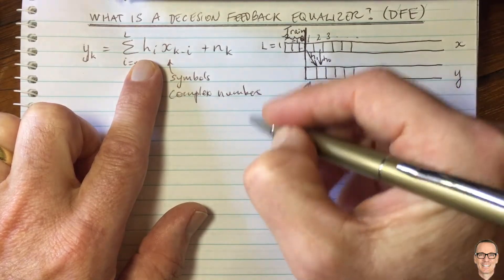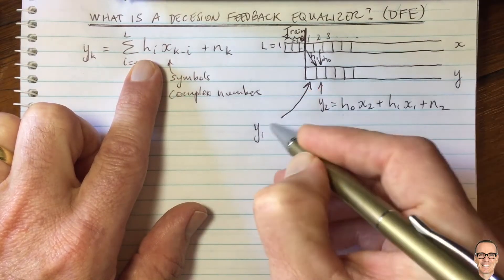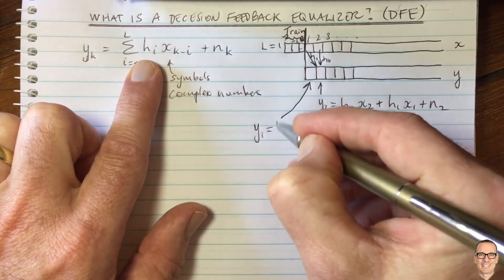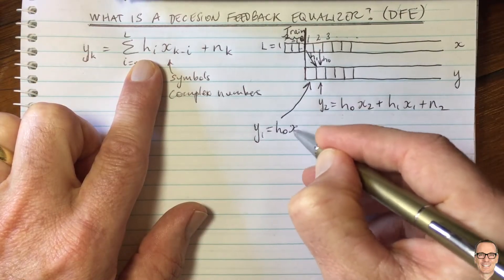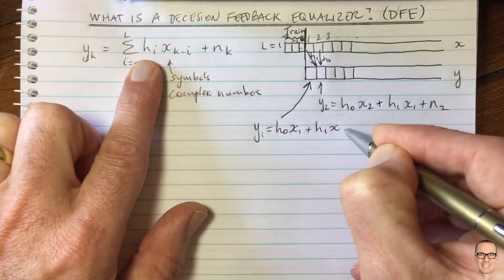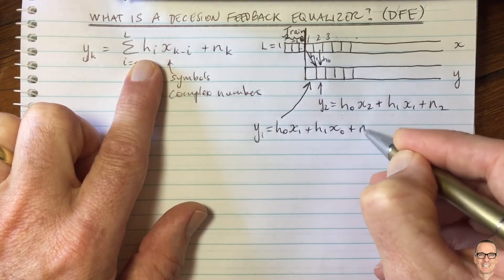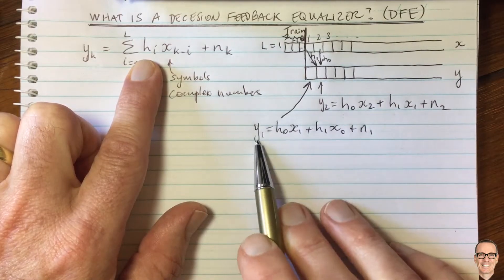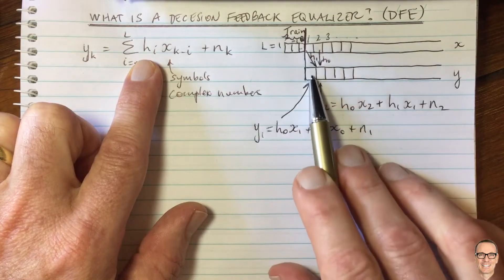So let's look at y1, for example, here. So y1 equals, well, it's just this is h naught times x1 plus h1 times x of naught plus n of 1. So this is the first measurement you're going to take from the real data.